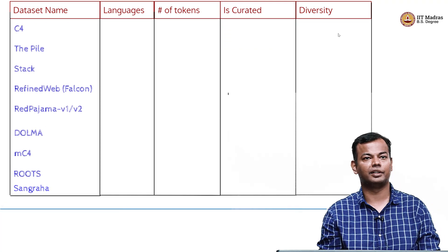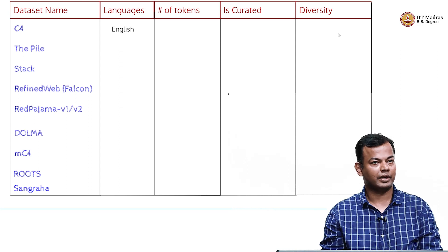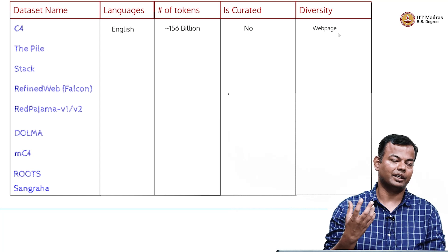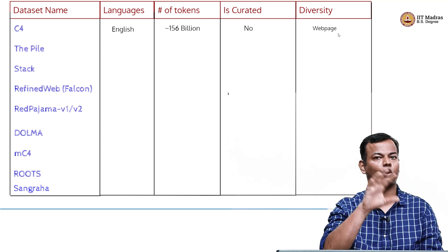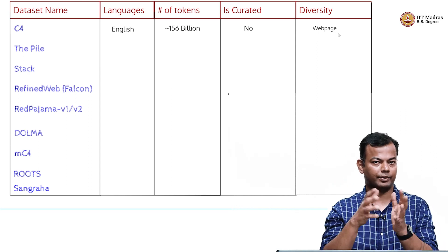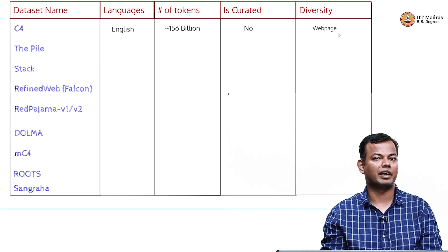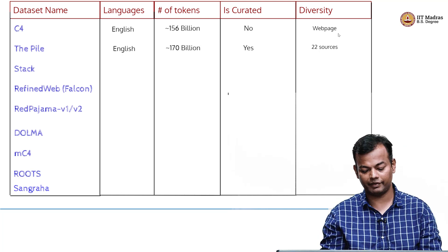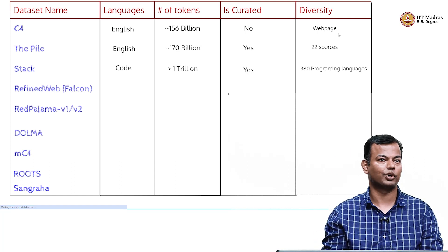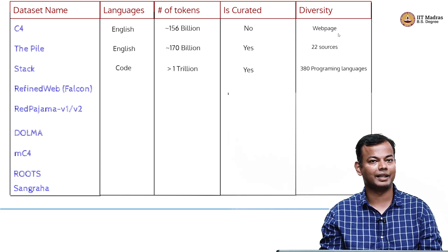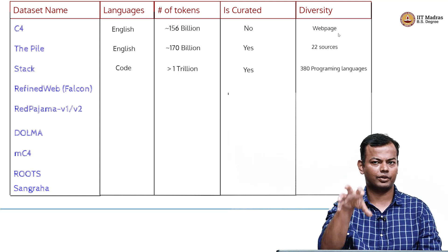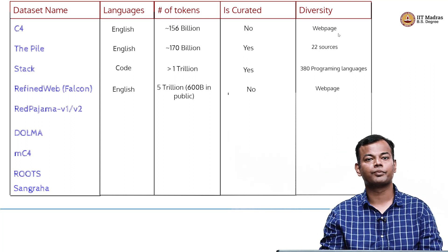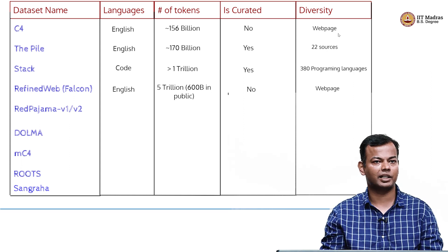Let us look at these datasets in terms of certain characteristics. C4 has only English data with 156 billion tokens. It is not carefully curated — they just took Common Crawl and applied cleaning and filtering. In terms of diversity, it only contains web pages. Pile is more curated because it is a collection of different sources; it has 170 billion tokens from 22 different sources. Stack is only code — it contains 380 programming languages and over 1 trillion tokens. RefinedWeb again starts from Common Crawl, is not curated, has 5 trillion tokens of which only 600 billion are released publicly, and contains only English web pages.